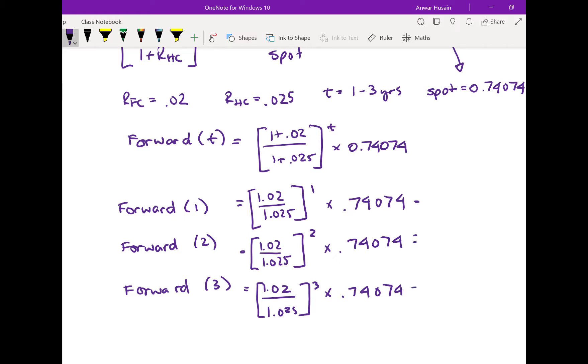So if I expand all of these out, I will calculate that in one year, the spot rate will be 0.73713. In two years, the spot rate will be 0.73353. And then in three years, the spot rate will be 0.72995.